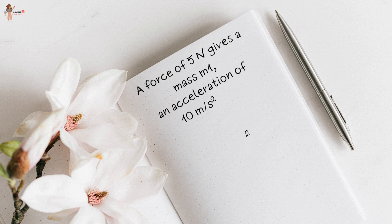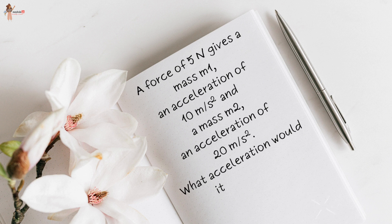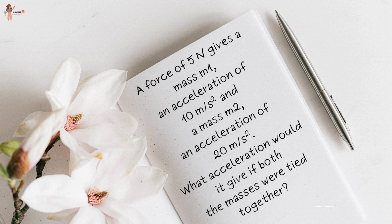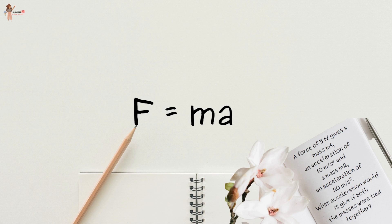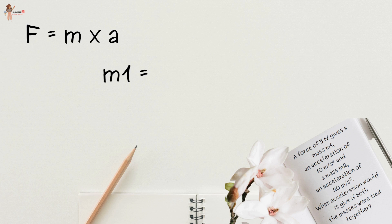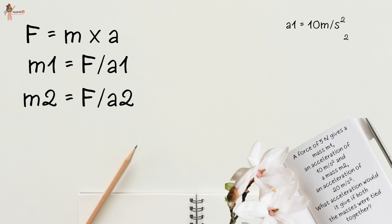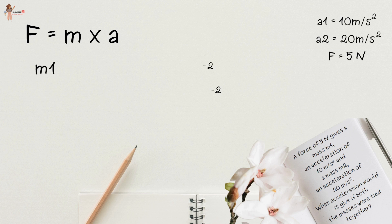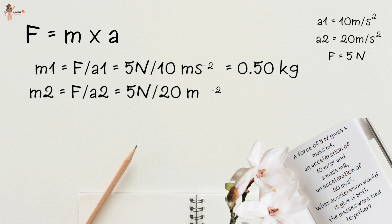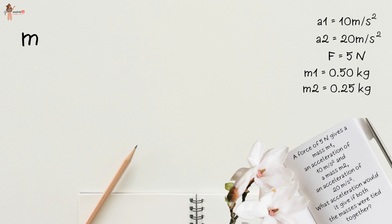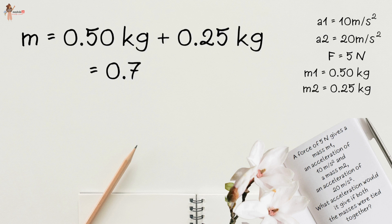A force of 5 N gives mass m₁ an acceleration of 10 m/s² and mass m₂ an acceleration of 20 m/s². What acceleration would it give if both masses were tied together? m₁ = F/a₁ = 5/10 = 0.5 kg and m₂ = F/a₂ = 5/20 = 0.25 kg. If tied together, total mass M = 0.75 kg. The acceleration produced by 5 N would be a = F/M = 5/0.75 ≈ 6.67 m/s².